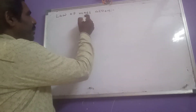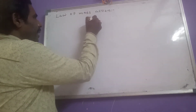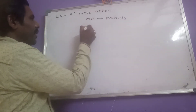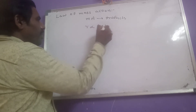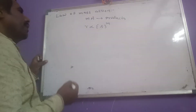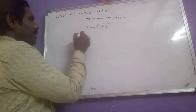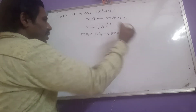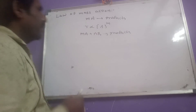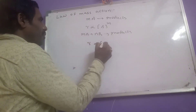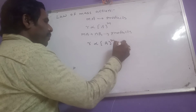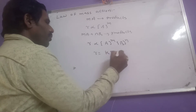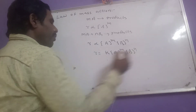For a simple reaction mA → products, according to the law of mass action, rate is directly proportional to [A]^m. For the reaction mA + nB → products, rate is proportional to [A]^m × [B]^n. We can write: rate = k × [A]^m × [B]^n.